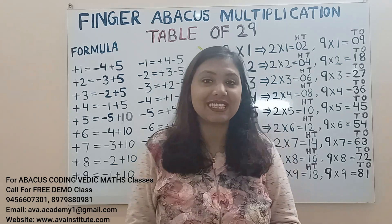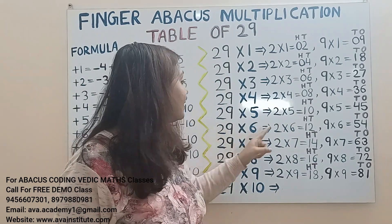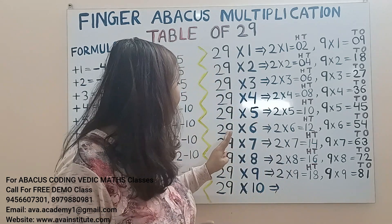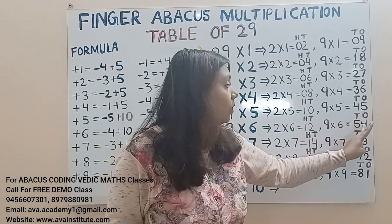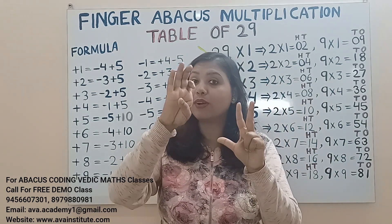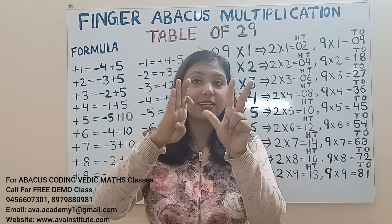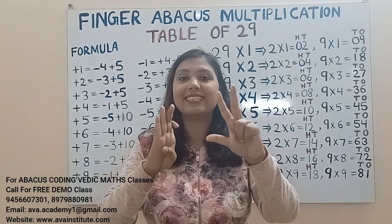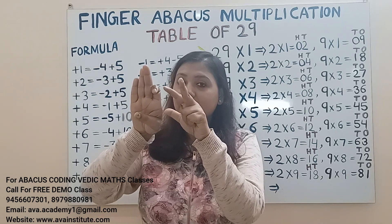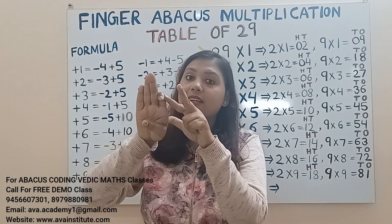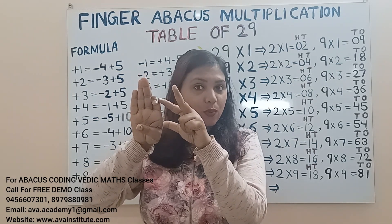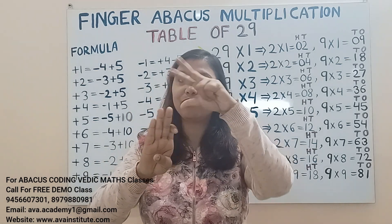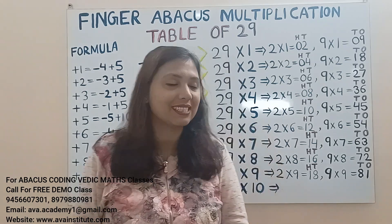Next, 29 sixes. 2 sixes are 12 — represent 1 in hundreds and 2 in tens. 9 sixes are 54 — add 50 in tens and 4 in ones. Friends, if you bend a finger half, it represents both 1 and 100. So the answer is 150, 60, 70... 1, 2, 3, 4 — 174 is the answer.